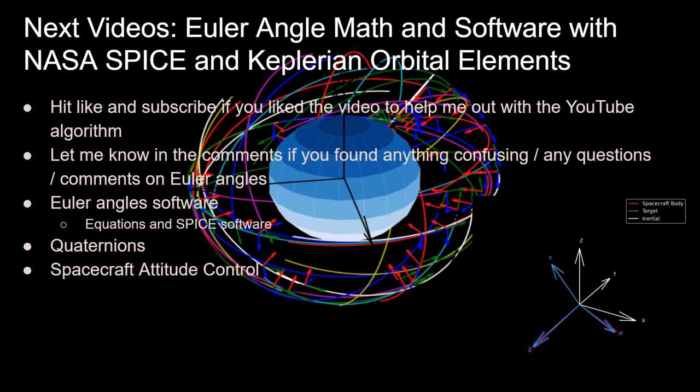This part of the numerical methods with Python series is a prerequisite for the spacecraft attitude control series with Python that I'm working on. After I get through Euler angles, I'll be going through quaternions and then getting started on that series. Leave any questions in the comments and thank you for watching.